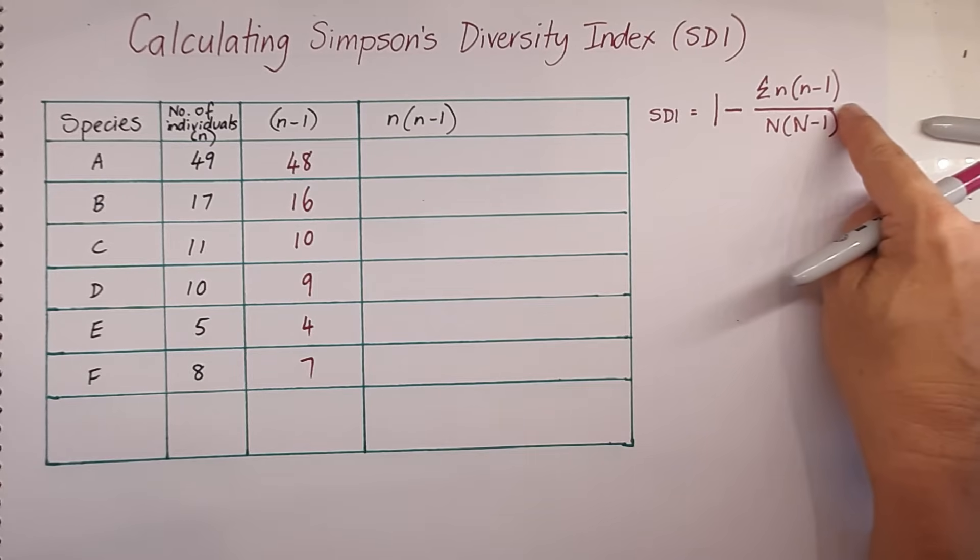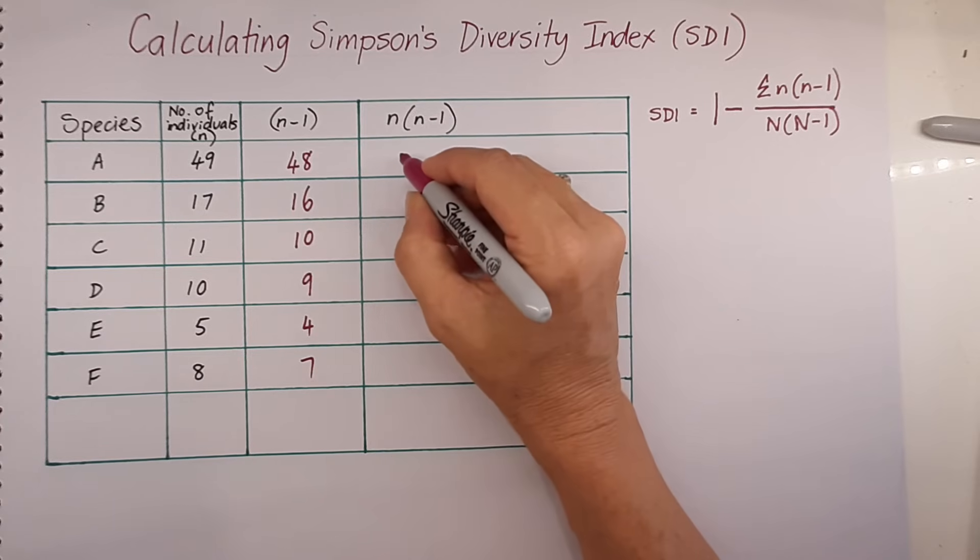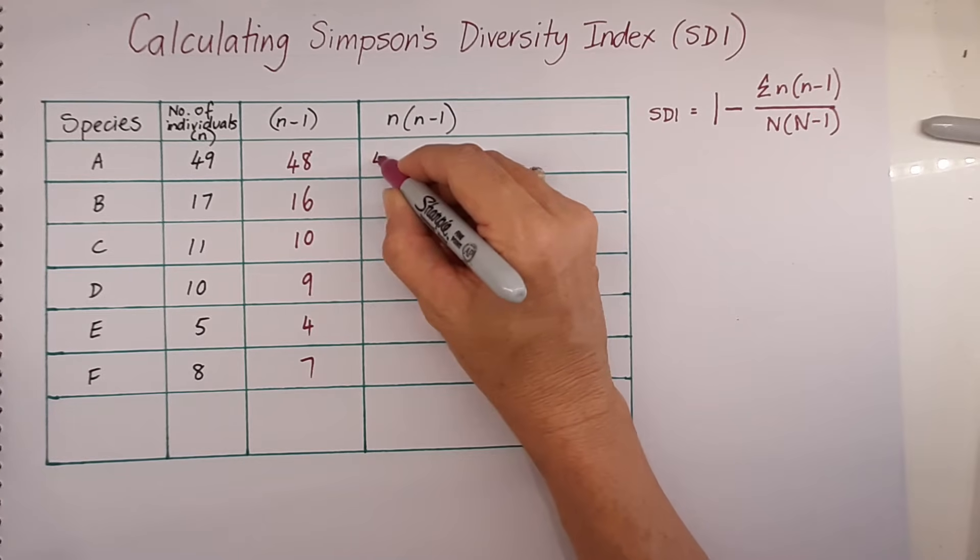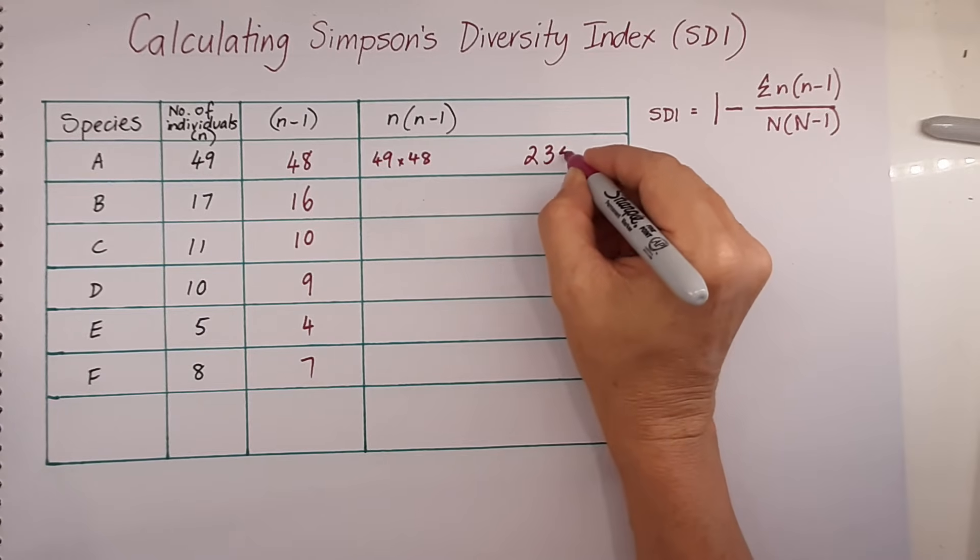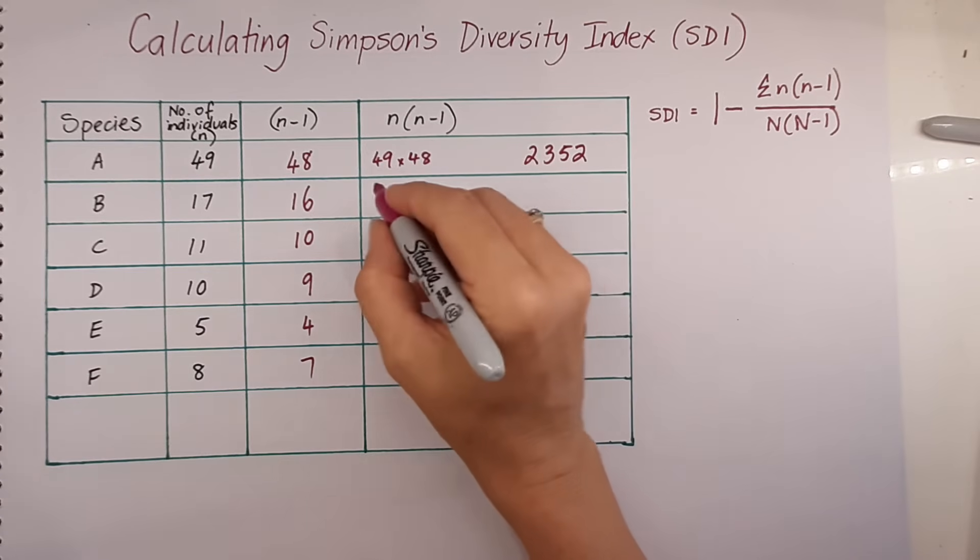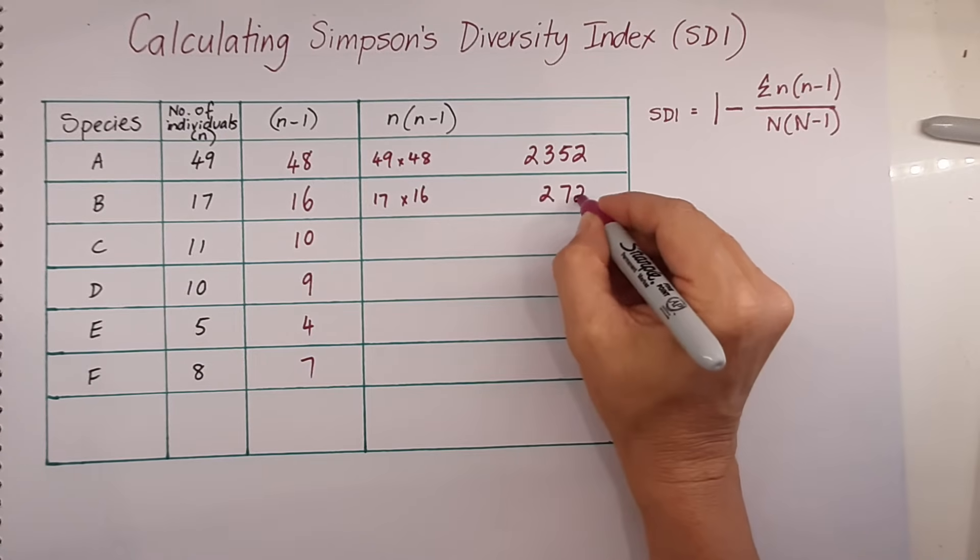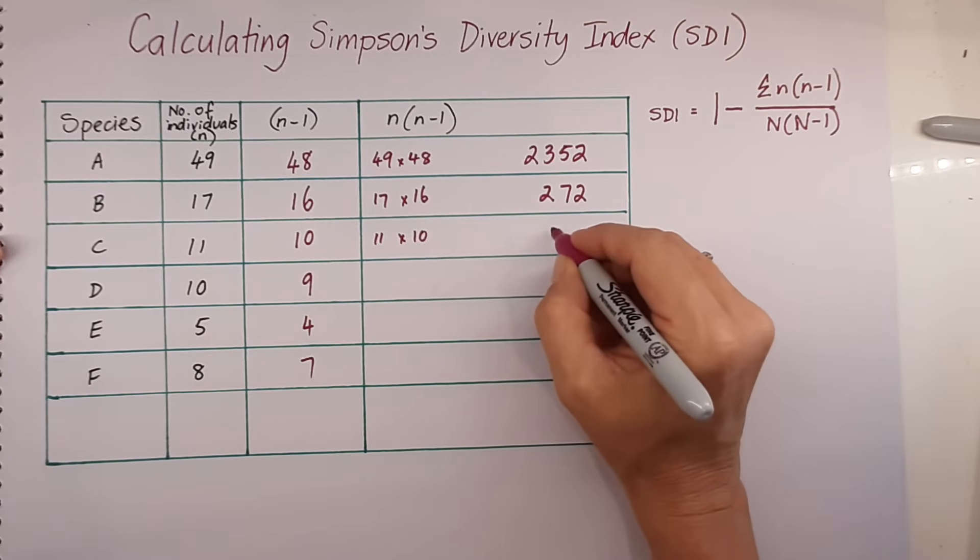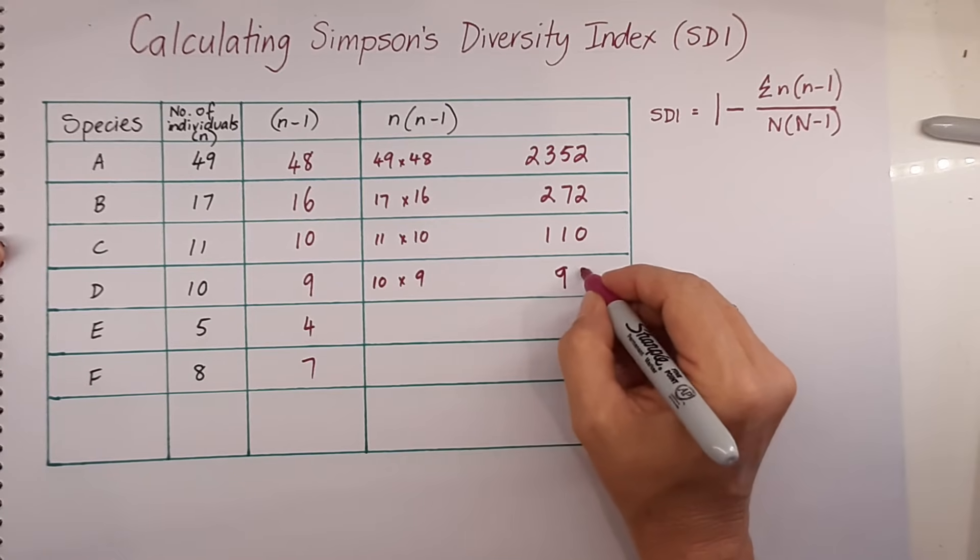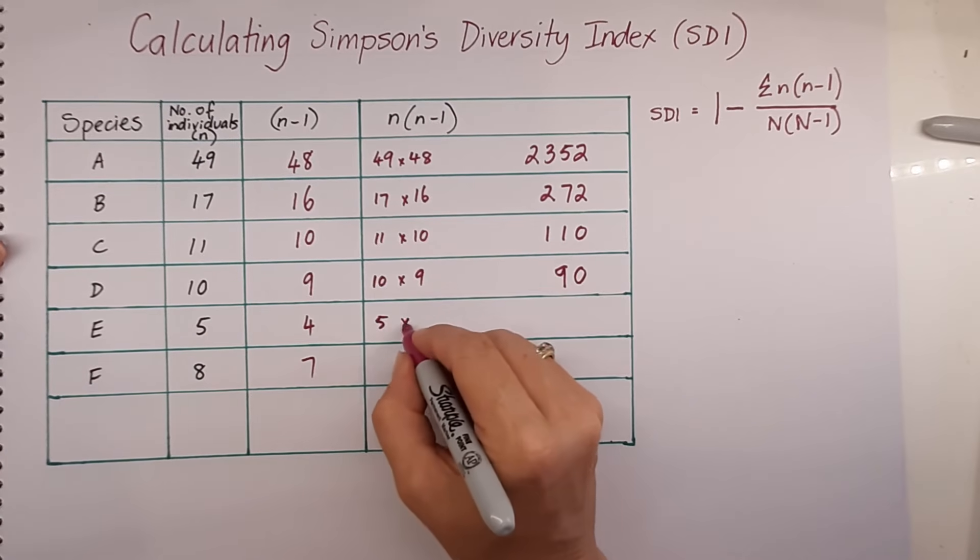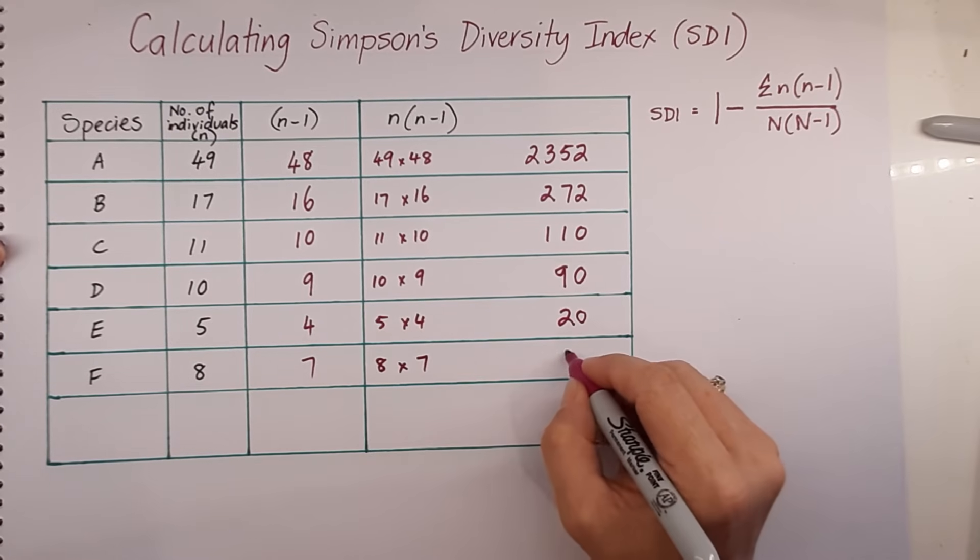So to help us work out the top line of this formula, we need to multiply n by n take 1. So in this case, we would end up with 49 multiplied by 48, and that's going to give us 2,352. 17 multiplied by 16 gives us 272. 11 by 10 gives us 110. 10 by 9 gives us 90. 5 by 4 is 20, and 8 multiplied by 7 is 56.